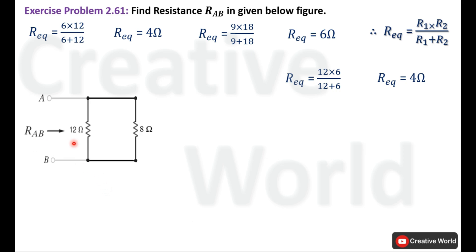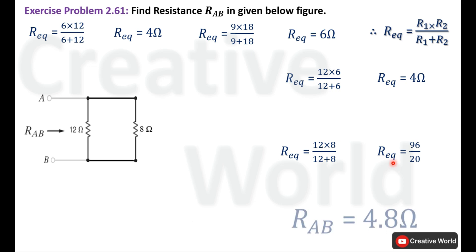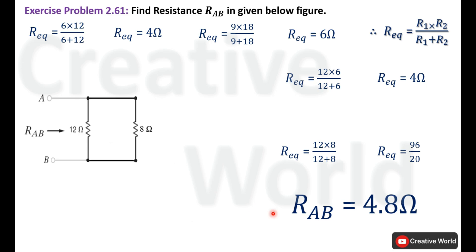Finally, to calculate RAB we find the equivalent of two parallel resistances: 12 ohm and 8 ohm. Using the formula with R1 equal to 12 ohm and R2 equal to 8 ohm: the product of 12 and 8 is 96 and the sum is 20. Dividing 96 by 20 gives R equivalent equal to 4.8 ohm, which is RAB. So the value of RAB in this network is 4.8 ohm.